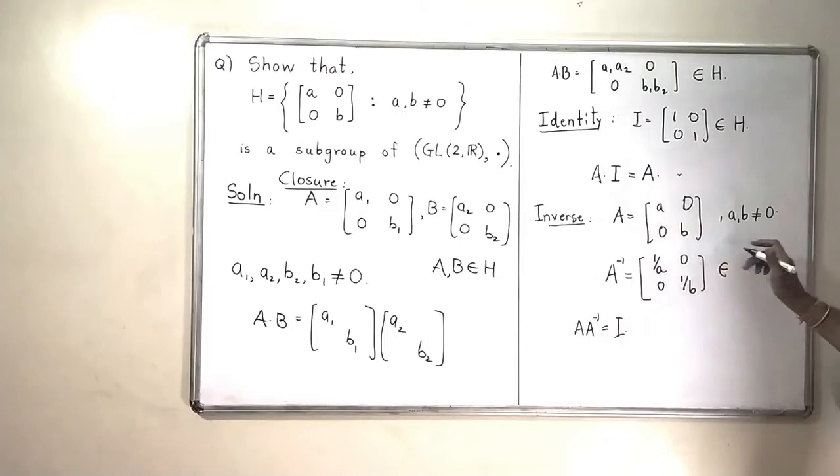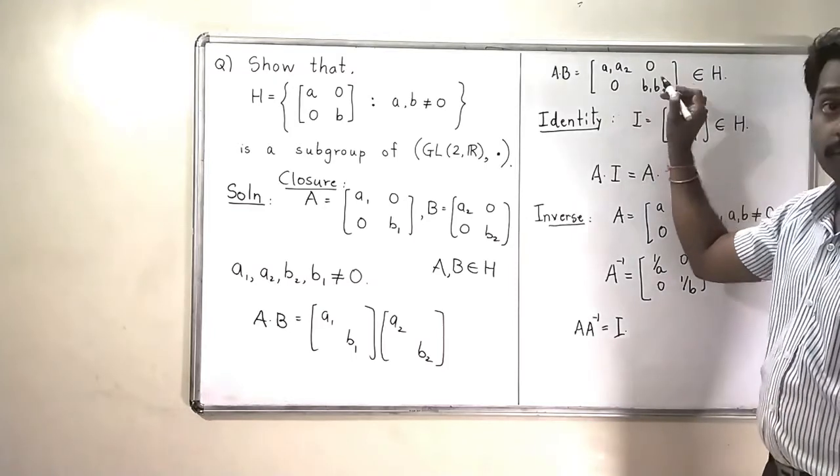So, the inverse matrix also is a matrix of set H because 1 upon A and 1 upon B are well defined. A and B are not 0 and this is also a diagonal matrix. The product is also a diagonal matrix.